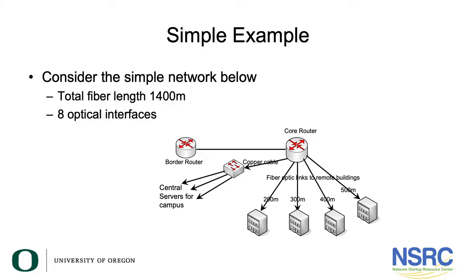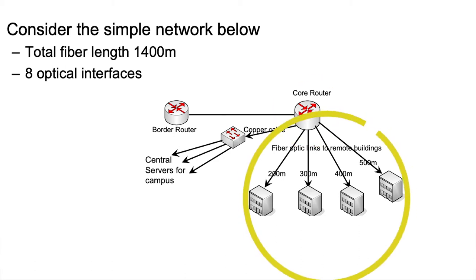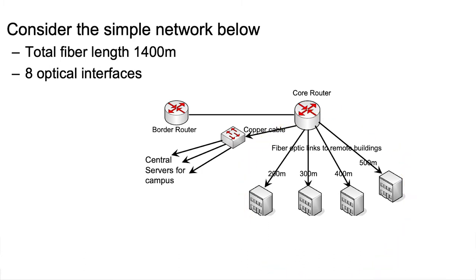Let's look at a simple example. We have a core router, border router, core router, and your central switch for the servers in your central location. This is where you're running your cable from your core location to four different buildings. The total distance is 1,400 meters or 1.4 kilometers, requiring eight optical interfaces — one in the core router and one in each remote building. This looks only at the cost of the optical interface and the fiber itself, not the cost of the router or switches.